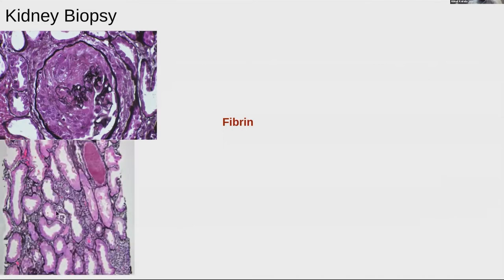You can see tubules with acute tubular injury, and there is a tubule filled with red cells — this is a red cell cast — and a lot of interstitial inflammation.